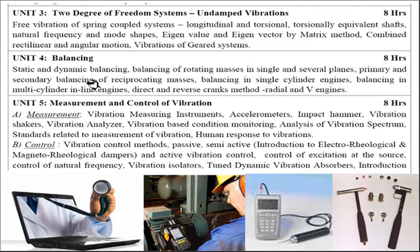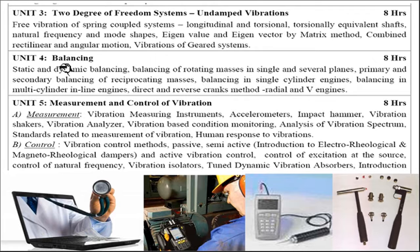Unit four covers the causes of vibration in systems — primarily the unbalanced force. Our primary aim is to reduce or eliminate this unbalanced force. There are different balancing methods applicable for different kinds of engines and rotating machinery, and these are what is covered in unit number four.